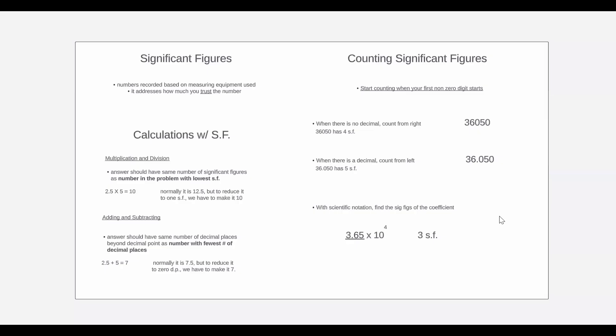Now with scientific notation, you want to find the sig figs of the coefficient. So for example, we have 3.65 times 10 to the fourth. We ignore this 10 to the fourth, and we just find the sig figs of 3.65, which is three sig figs.